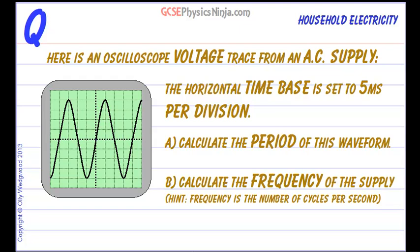So here is an oscilloscope voltage trace from an AC supply. What does AC mean? Alternating current. It's the name given to an oscillating voltage or current supply.